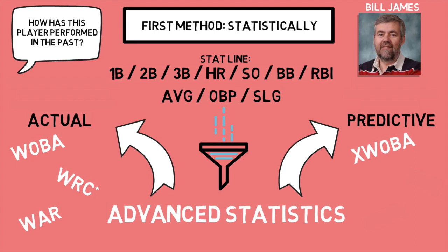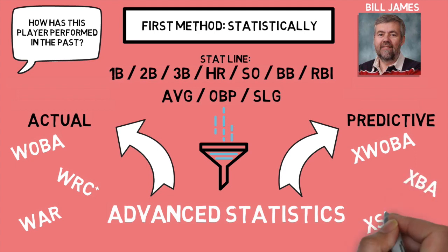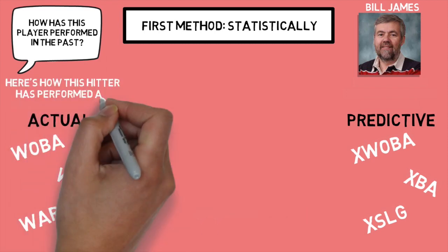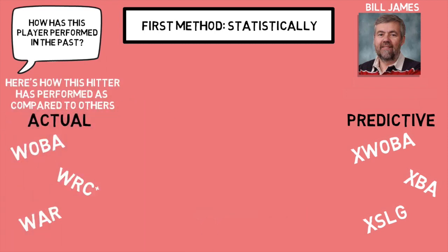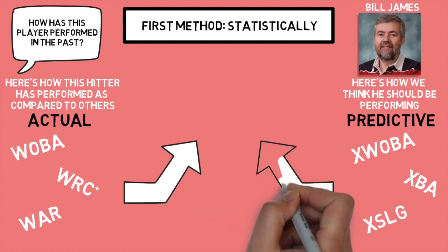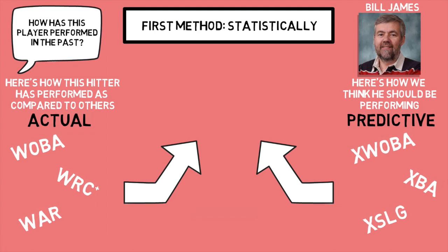The goal of this video isn't necessarily to tell you what these stats are or how to use them — it's more so to show you the way things are being done currently with them. Actual statistics are simply a more accurate stat line, showing us how that player has performed as compared to others. Predictive stats take his batted ball metrics to estimate the result of all of that player's balls in play, to give us a line of how he should be performing.